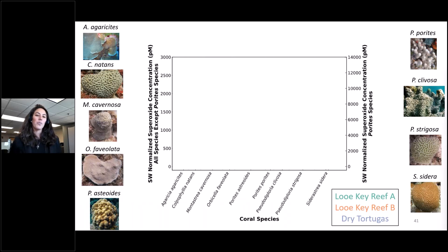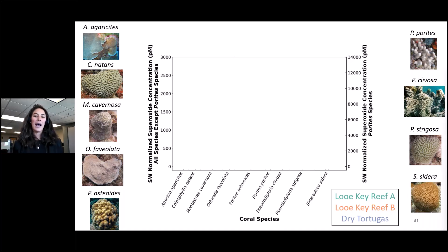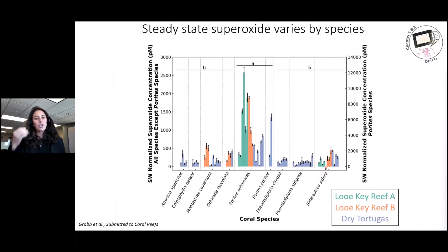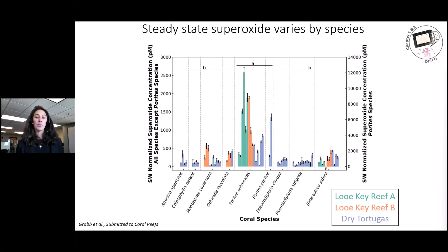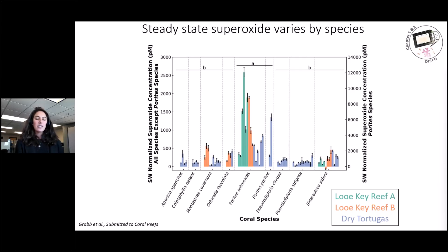On the Y-axis of this graph, we have superoxide concentration, which has been seawater normalized. On the left axis we show all the coral species, except on the right axis we separate out the Porites species. Across the X-axis are all the different coral species, also pictured on the sides. Different colors indicate different reef sites, and each bar represents one coral individual with error bars showing standard deviation. The first thing we noticed is that we measure really high superoxide concentrations associated with healthy coral. We also see a species-specific difference — Porites species, in Group A at center right, have significantly higher superoxide concentrations than the other species.